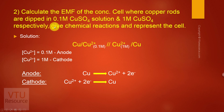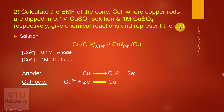Next problem: calculate the EMF of the concentration cell where copper rods are dipped in 0.1 M copper sulfate solution and 1 M copper sulfate solution respectively. Give the chemical reactions and represent the cell. Here, unlike the earlier case, cell representation is not given, so it is a little more difficult to determine anode and cathode.